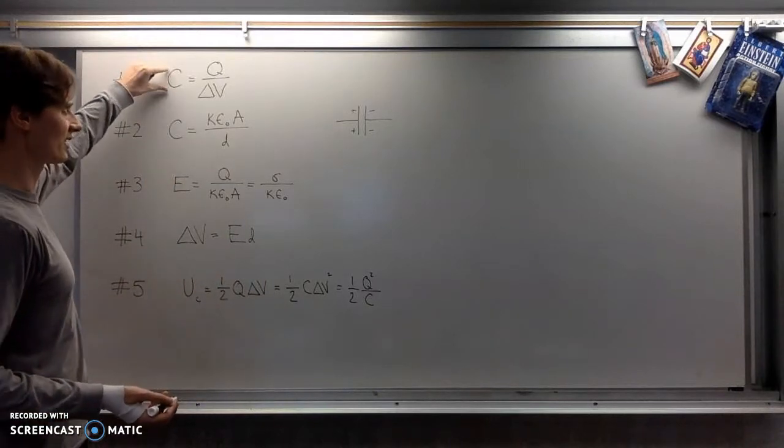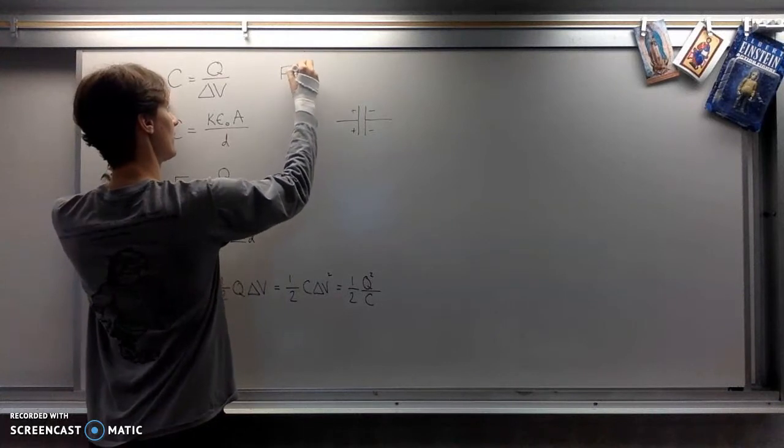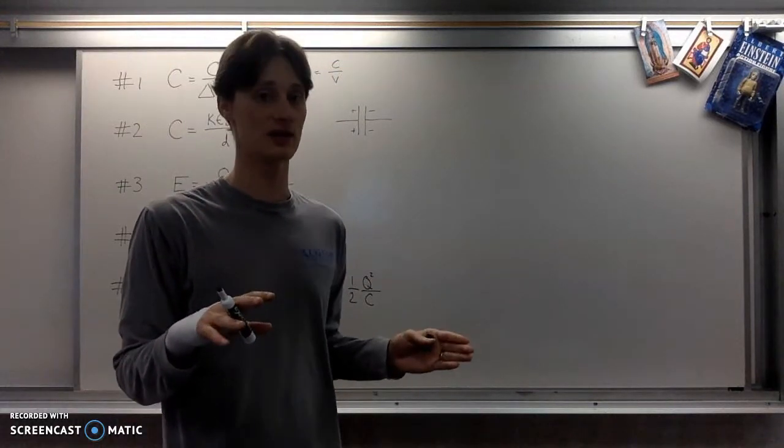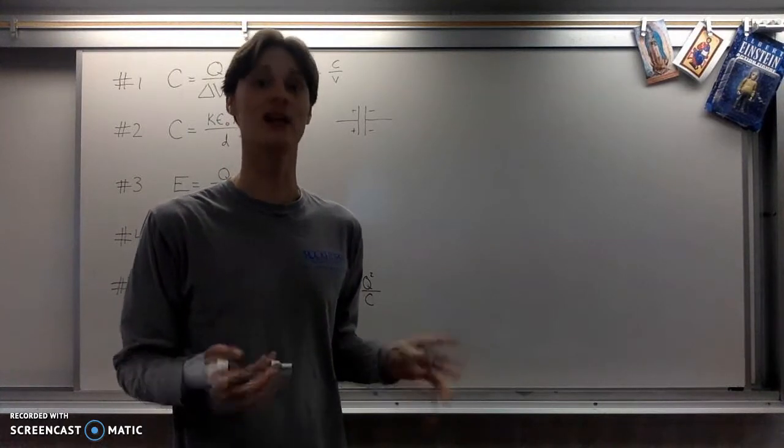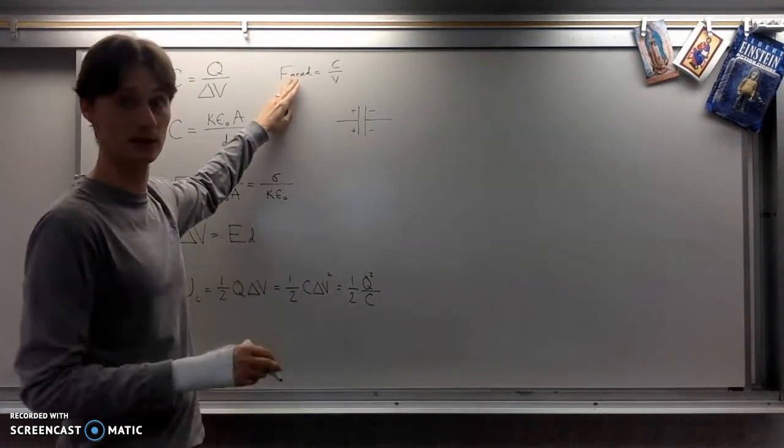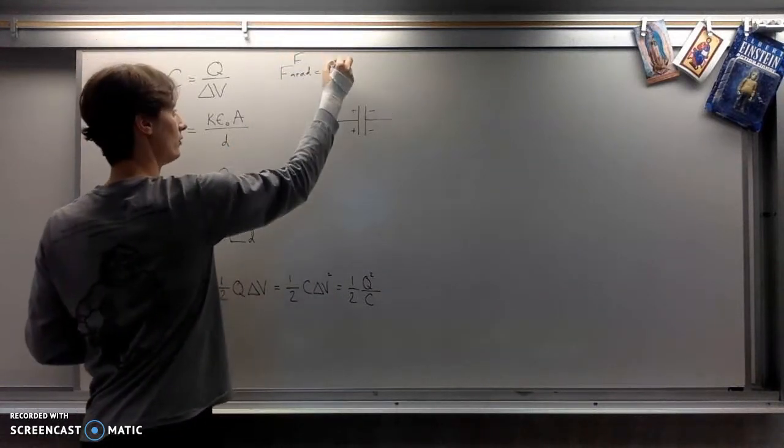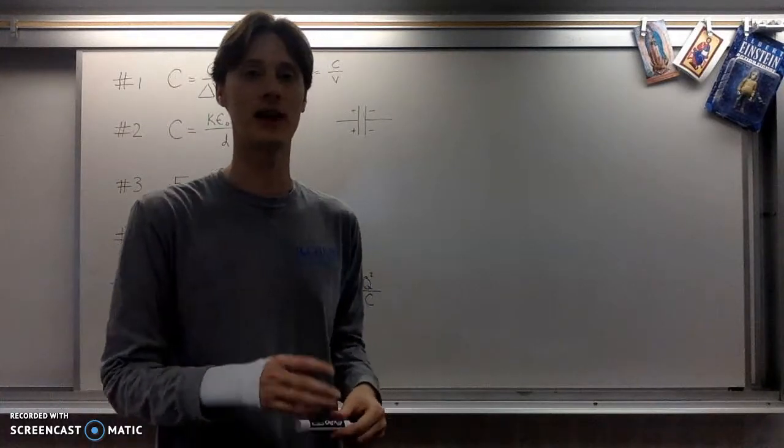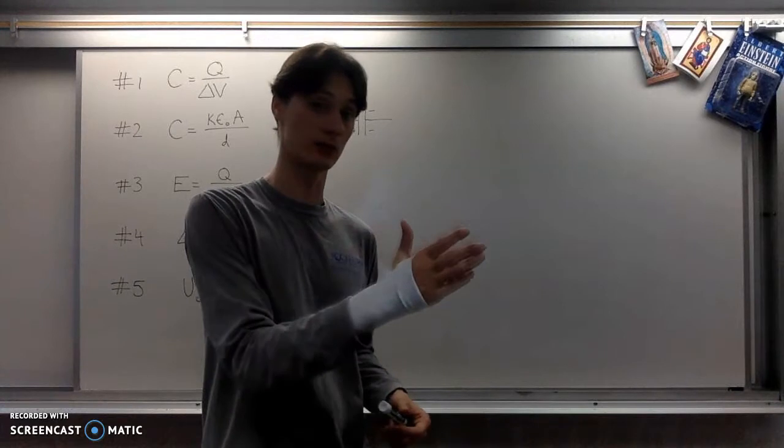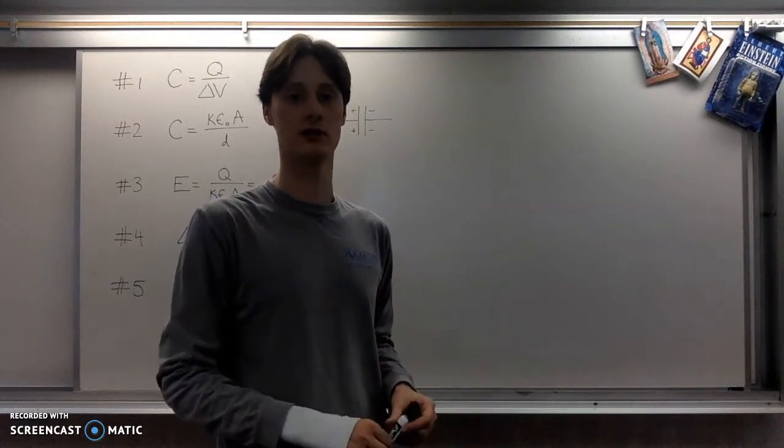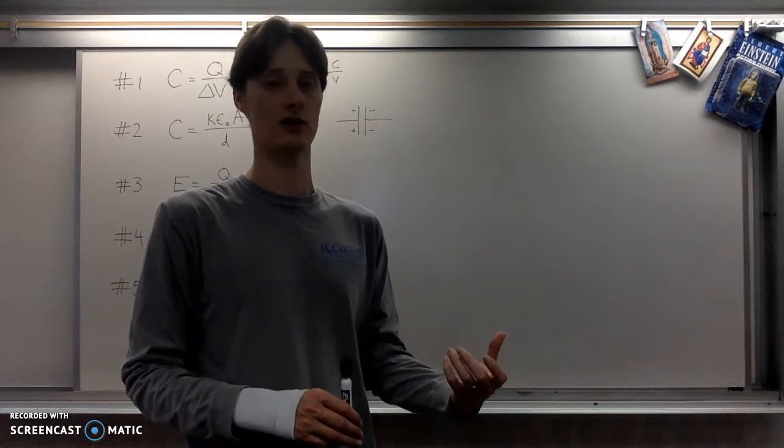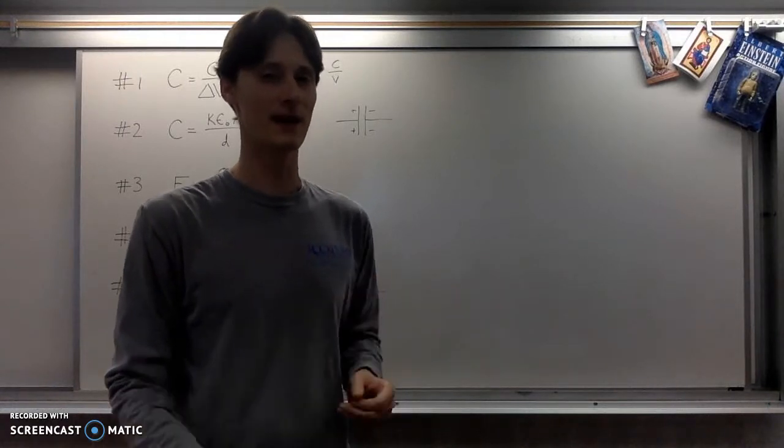So capacitance is measured in farads. And according to this equation right here, a farad is a Coulomb per volt. By the way, feel free to pause the video whenever you need to write something down and I'm going too fast. So a farad, abbreviated with an F, is a Coulomb per volt. So what does that mean? Well, that means that if you have a one microfarad capacitor, then that means that it stores one microcoulomb of charge per volt that you put onto it. If you had a one farad capacitor, it would store a Coulomb of charge on each plate per volt that you put on it. A farad of capacitance is enormous.